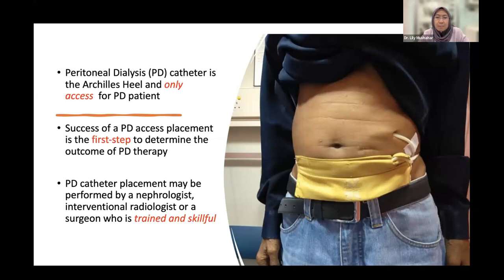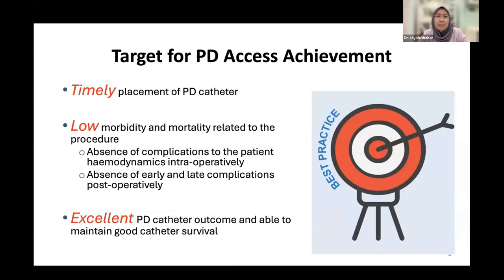PD catheter placement can be performed by nephrologists, interventional radiologists, or a trained surgeon. When we talk about PD access achievement, the main thing is timely placement of the PD catheter, because a long waiting list means the patient may be on temporary hemodialysis longer, and this can lead patients to change their mindset and convert to hemodialysis. The target for PD access achievement is low morbidity and mortality related to the procedure, absence of complications, and excellent PD catheter outcome with good patency and catheter survival.